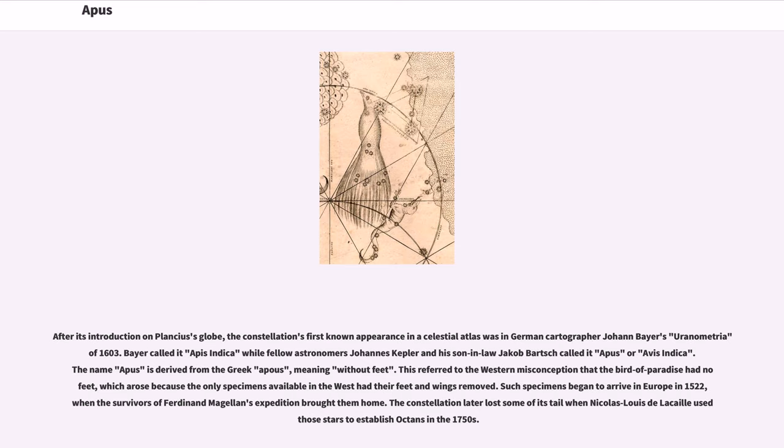After its introduction on Plancius' globe, the constellation's first known appearance in a celestial atlas was in German cartographer Johann Bayer's Uranometria of 1603. Bayer called it Apis Indica while fellow astronomers Johannes Kepler and his son-in-law Jacob Bartsch called it Apis or Avis Indica. The name Apus is derived from the Greek apous, meaning without feet. This referred to the Western misconception that the bird of paradise had no feet, which arose because the only specimens available in the West had their feet and wings removed. Such specimens began to arrive in Europe in 1522, when the survivors of Ferdinand Magellan's expedition brought them home. The constellation later lost some of its tail when Nicolas-Louis de Lacaille used those stars to establish Octans in the 1750s.